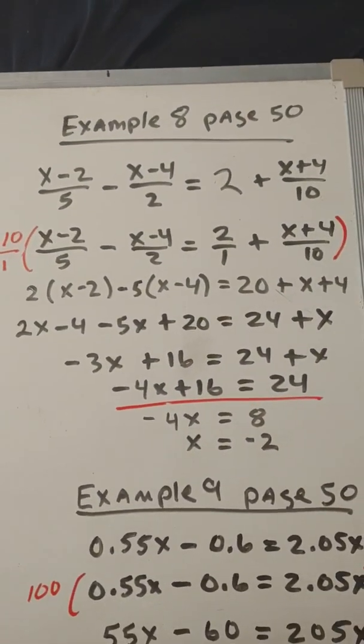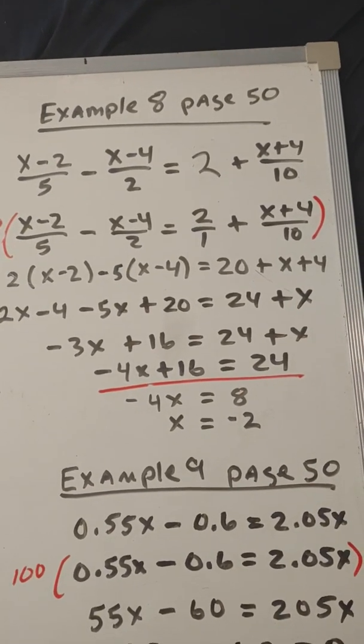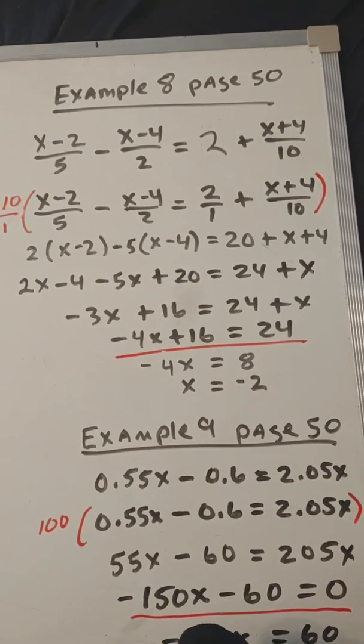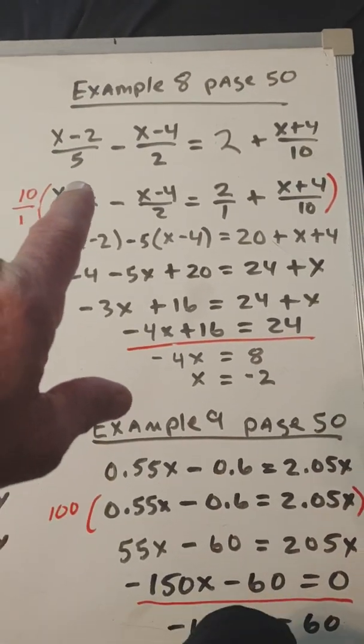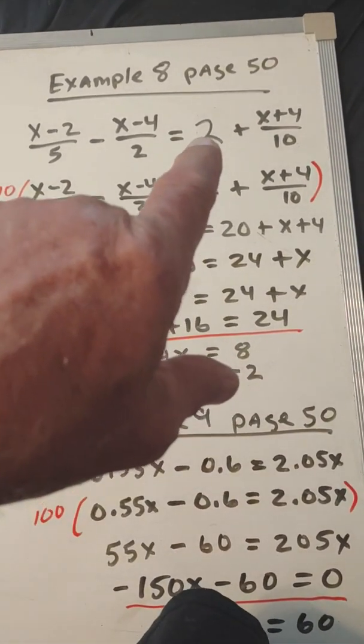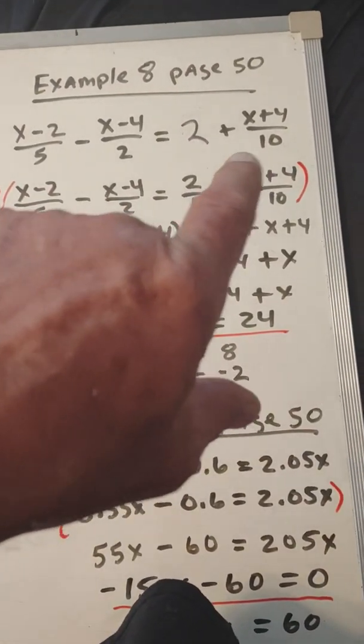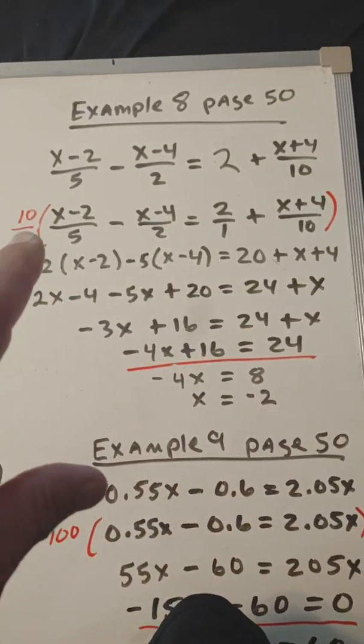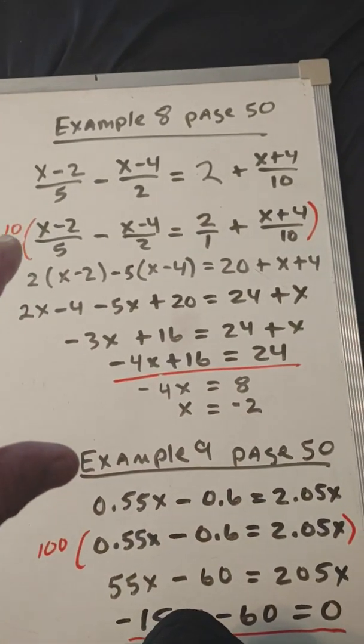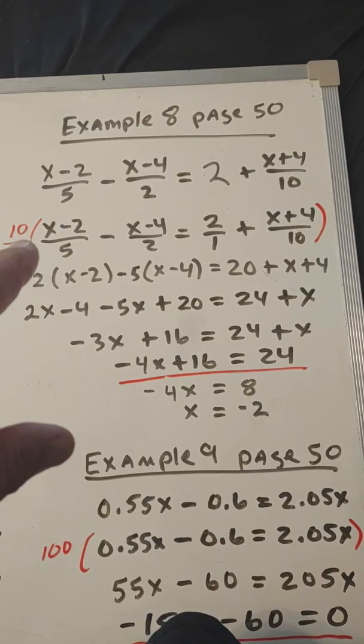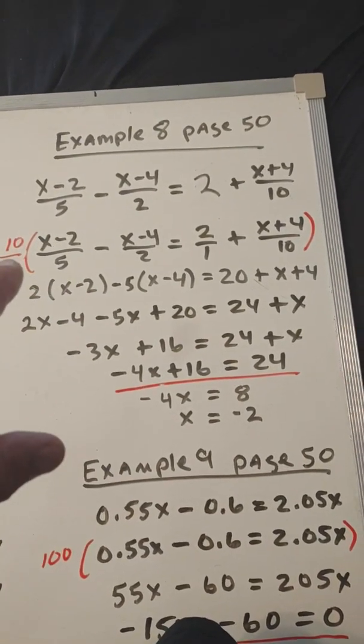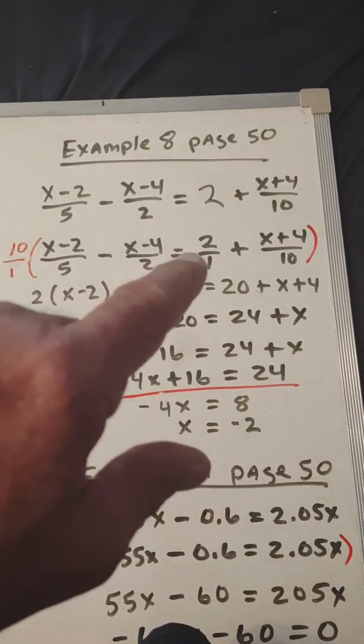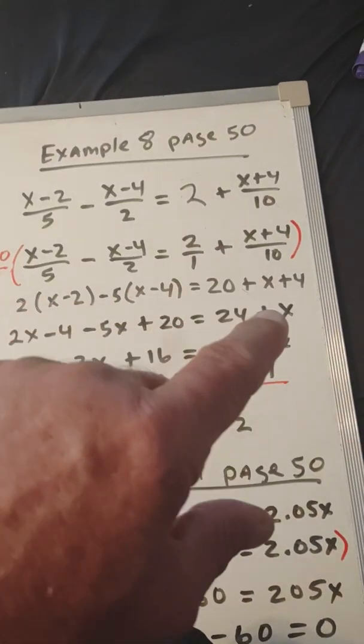Come over here to example 8, page 50. It's a little different. It's got fractions. We don't ever have to use fractions when we solve. We can multiply through by the least common multiple and get rid of those fractions. And then it becomes a multi-step problem like we want to solve. Like, for instance, in this problem, we have a denominator of 5, 2, 1. Here, you can see I changed this 2 to 2 over 1 because I wanted to make everything a fraction and 10. So, the smallest number that 5, 2, 1, and 10 will go into is 10. So I'm going to multiply each one of these terms by 10 over 1. When I multiply this by 10 over 1, 5 divides into 10, gives me 2, so it gives me 2 times x minus 2. When I multiply 10 over 1 over here, the 2 divides into 10, and it gives me 5, so it's minus 5 times x minus 4. When I multiply here, it's just 10 times 2, which is 20. When I multiply here, the 10s cancel out, so it's just x plus 4.